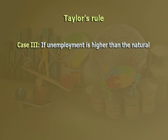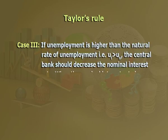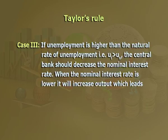Case three: if unemployment is higher than the natural rate (u_t > u_n), the central bank should decrease the nominal interest rate. When the nominal interest rate is lower, it will increase output, which leads to a decrease in unemployment. Coefficient b should reflect how much the central bank cares about unemployment. A higher b means the central bank is ready to deviate from target inflation and give importance to unemployment, trying to keep unemployment close to the natural rate.